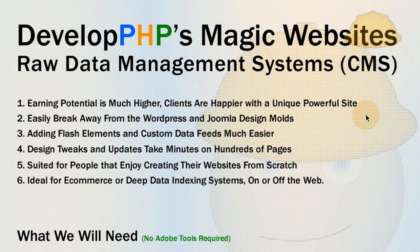Hello everybody, Adam at FlashBuilding here with another tutorial series. In this lesson, which is going to be very in-depth and I'm going to go really slow so beginners can hang with us, we're going to do raw data management systems from scratch — the equivalent to content management systems. These are systems you can create or download, use for yourself or give to clients, to have a dynamic PHP MySQL website. That's what Joomla and WordPress both are: dynamic PHP MySQL websites that store data in a MySQL database, and PHP interacts with that database to render all the pages.